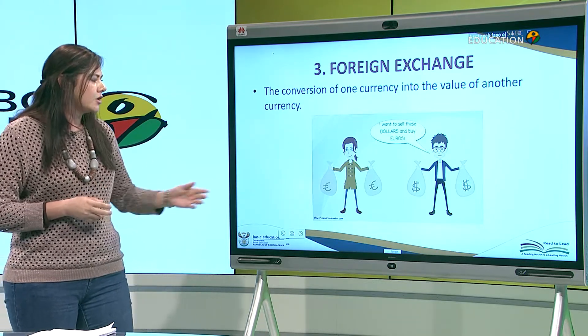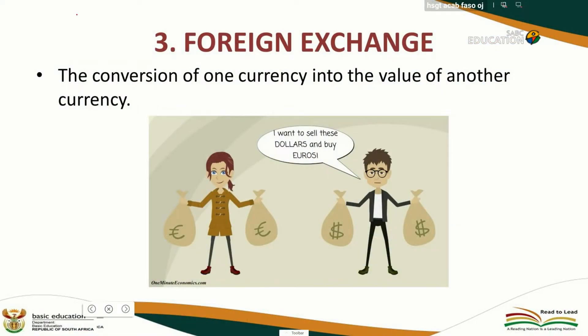If you look at the picture, you will see a person who has dollars and wants to sell them and buy euros — he is going to exchange his dollars for euros. Exchanging is when you give your dollars for rands or rands for dollars.